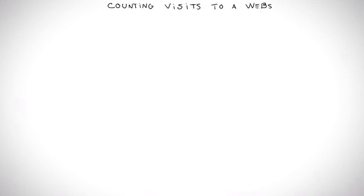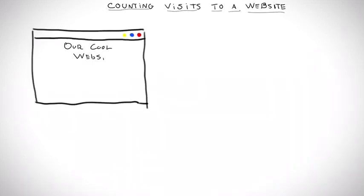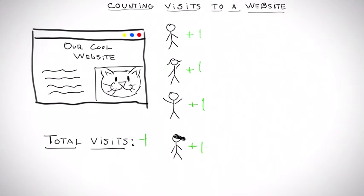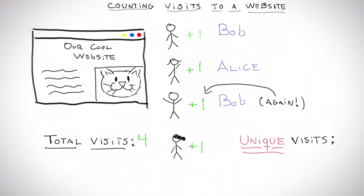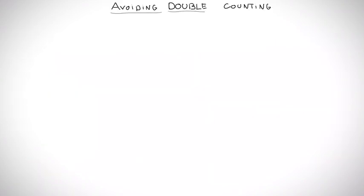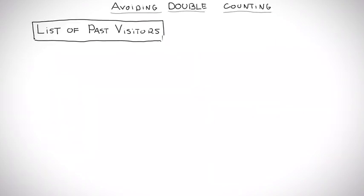Imagine that we want to count how many people visit a website. Well, we can just maintain a counter with the total so far and increase it every time someone accesses the website. But matters get way more complicated if you want to count the number of unique visitors to our website. To avoid double counting, we need to keep a list of every past visitor.